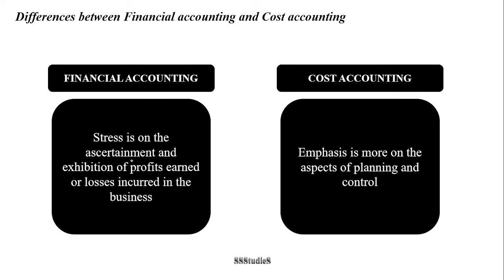Financial accounting focuses on the ascertainment and exhibition of profits earned or losses incurred in the business, whereas the focus of cost accounting is more on the aspects of planning and control. You use the cost data to plan the activities of the business, and in case of any deviations from the prescribed standards, you try to control those deviations. That is the role of cost accounting.